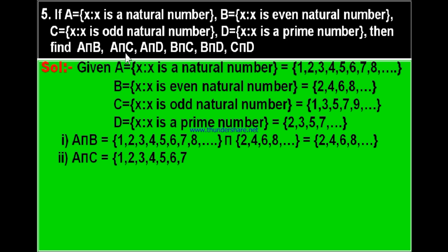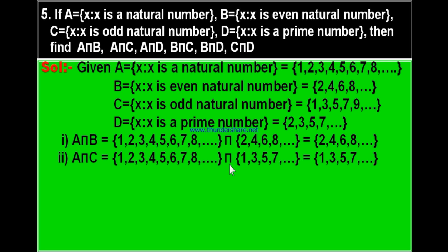The second part is A intersection C. The same set A = {1, 2, 3, 4, 5, 6, 7, 8, ...} intersection set C = {1, 3, 5, 7, 9, ...}. You can find 1, 3, 5, 7 in the first set. Therefore A intersection C equals {1, 3, 5, 7, ...}, which is set C.